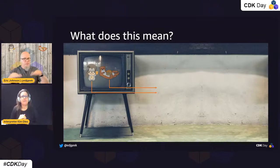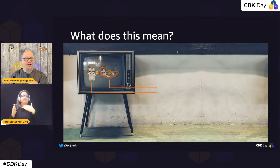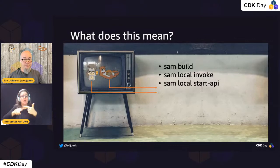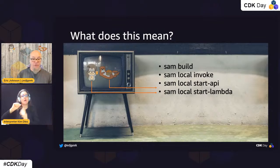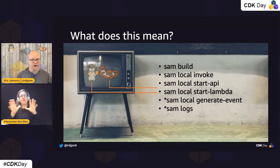You're able to use these without synthesizing out a template — AWS SAM is going to work within a CDK project directly, natively, without having to change anything in the CDK project. It means that regardless of whether I'm using SAM or CDK, I have access to SAM build, SAM local invoke, SAM local start API, SAM local start Lambda, and SAM local generate event.